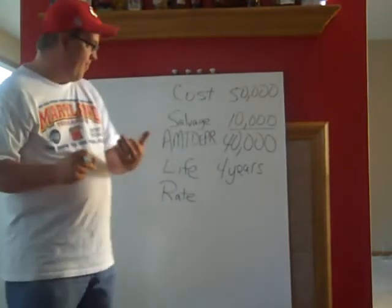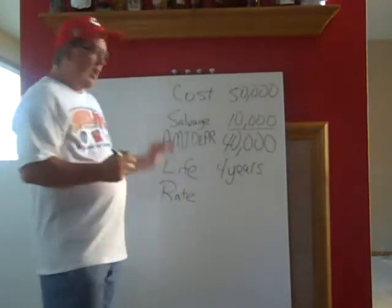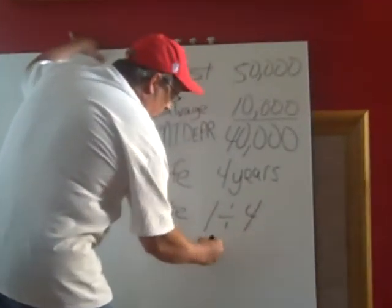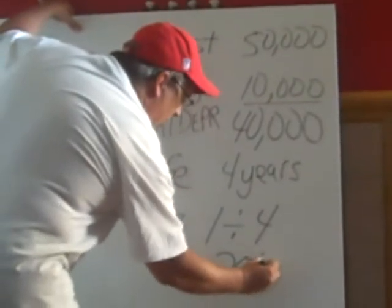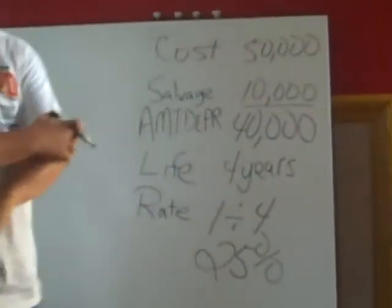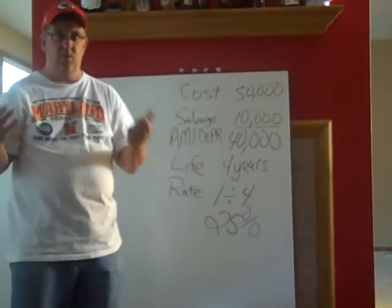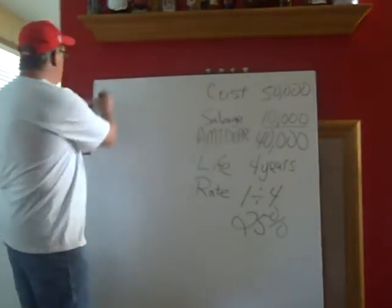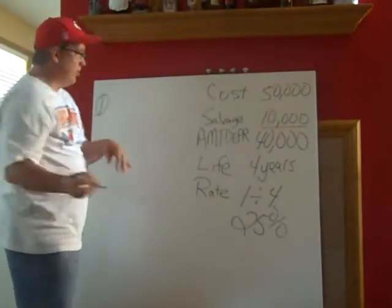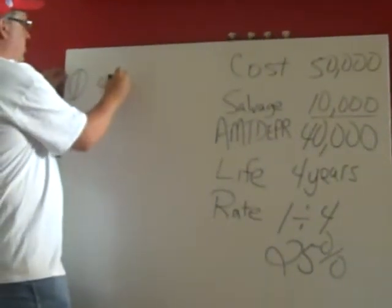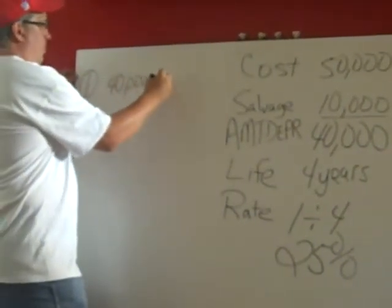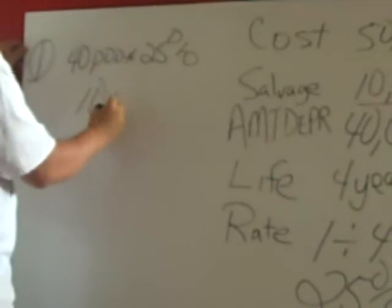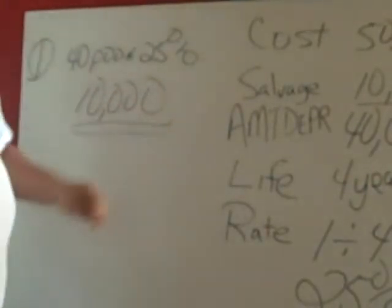If we were to calculate a rate on that, our depreciation rate is going to be one divided by the number of years — in this case, 25%. So 25% a year is our depreciation rate. The amount to be depreciated is $40,000, so for year one we're going to take $40,000 times 25%, giving us a depreciation expense of $10,000 per year.